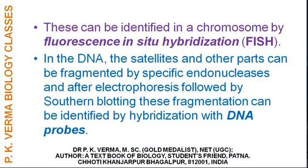In the DNA, satellites and other parts can be fragmented by specific endonucleases, and after electrophoresis followed by southern blotting, these fragmentations can be identified by hybridization with DNA probes. So you need a sample of DNA, isolate satellite DNA using restriction endonuclease and buoyant density centrifugation, then undergo electrophoresis, followed by southern blotting, and matching is done after hybridization with DNA probes.